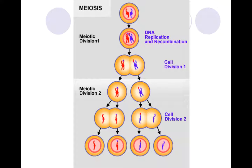Here's our meiosis diagram. We have our DNA replication in division one — this is also where we get our recombination, our crossing over, and our genetic variation. Then we get our cell division into two cells, and then we go into the meiosis two process where there is no new chromosome replication — we're just dividing them apart. Our end result is four cells with half the number of chromosomes from our initial cell, and they're genetically different from our initial cell's chromosomes.